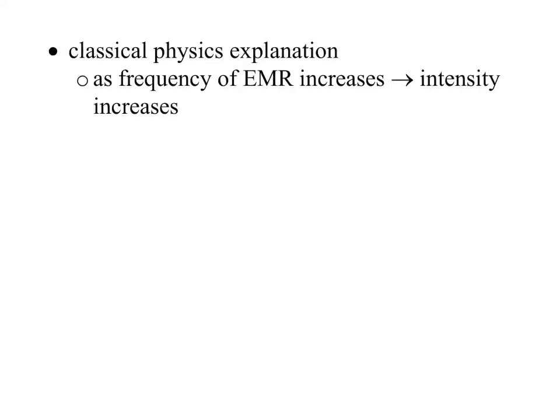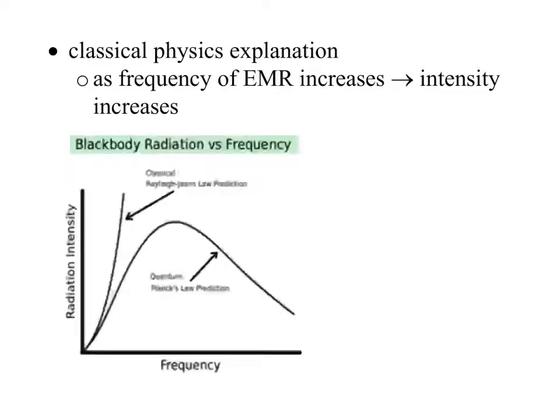Anyways, why is this important? Why do we care? Because this should mean that with black body radiation, as the frequency of EMR increases, the intensity of it should increase. So what should happen is the intensity should just go like that, and it should just go off the charts. And the thing is, it doesn't.